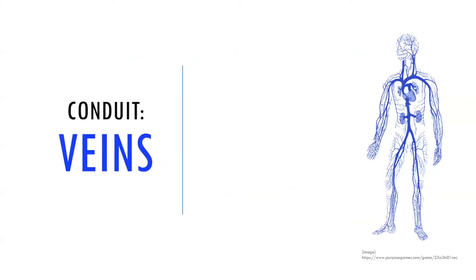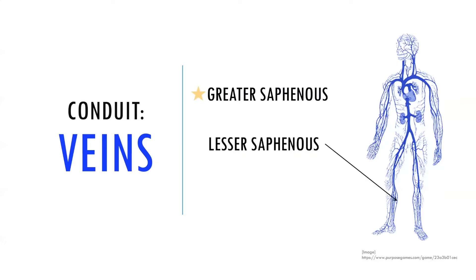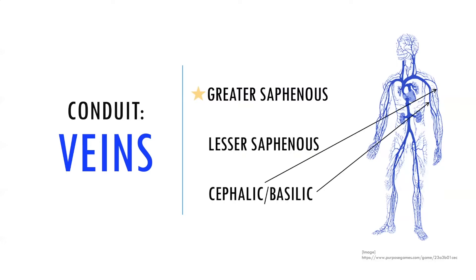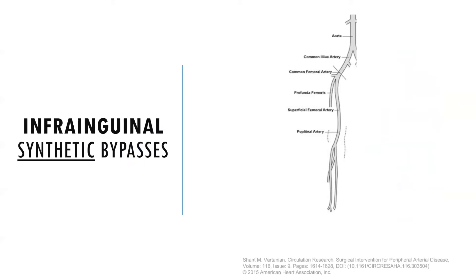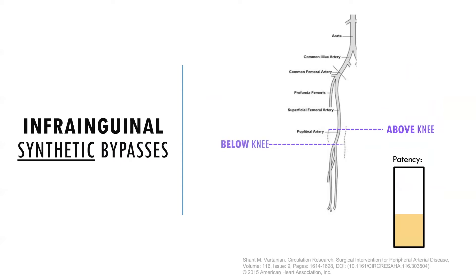Ideally, the greater saphenous vein is used because it has a relatively large diameter, it's long, and it's easily harvested. But if it's already been used for previous bypass surgery or it's dilated and varicose, other options are the lesser saphenous vein, or the cephalic and basilic veins in the arm. When no good quality vein is available, a synthetic graft can be used, usually PTFE. But unlike vein grafts, the durability of synthetic bypass grafts worsens the lower the distal anastomosis is. Compared to above-knee bypasses, below-knee synthetic bypasses have patency rates that are significantly worse.